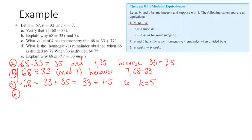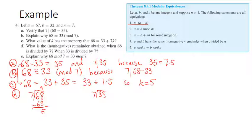For part d, what is the non-negative remainder when 68 is divided by 7, and when 33 is divided by 7? For 68 divided by 7: 7 times 9 is 63, so it goes in 9 times with a remainder of 5. For 33 divided by 7: the closest multiple of 7 is 28, so it goes in 4 times with a remainder of 5 as well. In both cases we get 5.